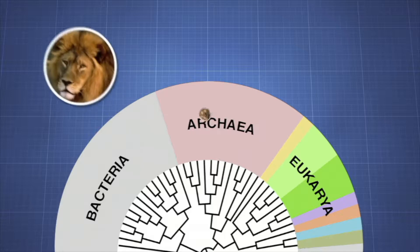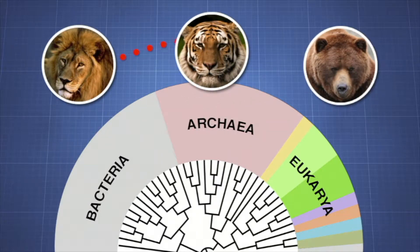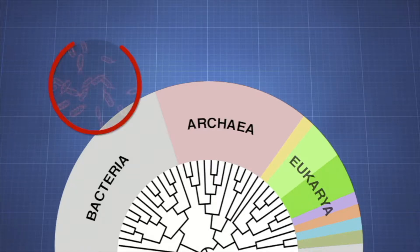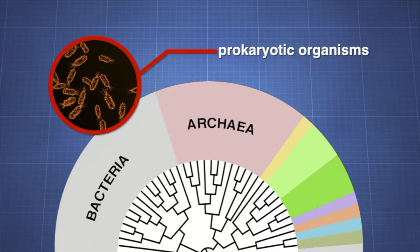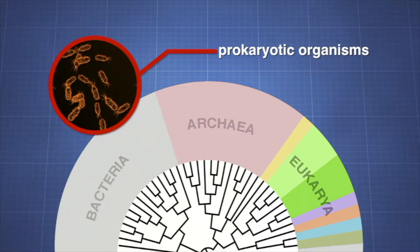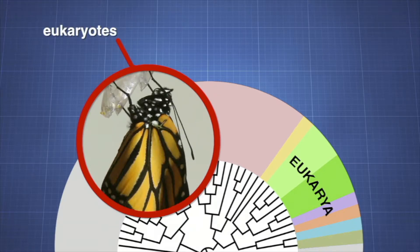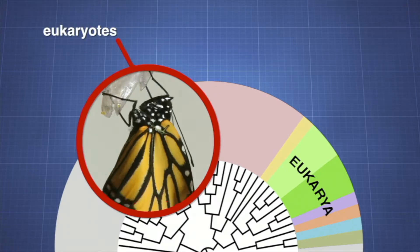Species that are more closely related share more of the nucleotides making up their ribosomal RNA. Each branch and division represents an evolutionarily distinct organism or group of organisms that share specific characteristics. Archaea and bacteria encompass prokaryotic organisms without a membrane-bound nucleus, while eukarya includes all eukaryotes — multicellular organisms that have a membrane-bound nucleus.